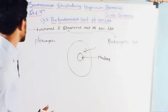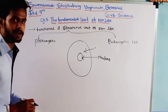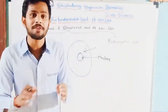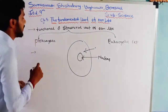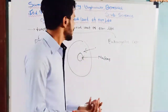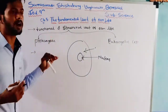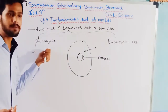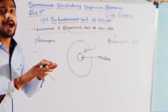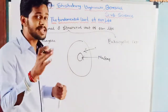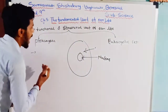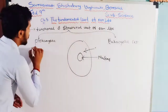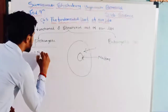In the prokaryotic cell, the nucleus is not well defined — it does not contain a well-defined nucleus. What this means is that in the prokaryotic cell, the nucleus is not bounded by a nuclear membrane; there is an absence of the nuclear membrane. Due to this absence of nuclear membrane, the nucleus in the prokaryotic cell is known as the nucleoid.